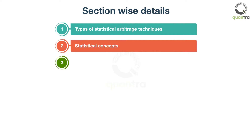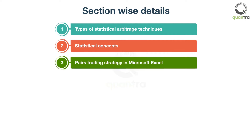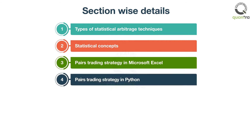In the third section, you will learn to implement a pairs trading strategy on a lead and aluminium pair in Microsoft Excel. In the fourth section, you will implement the same in Python.